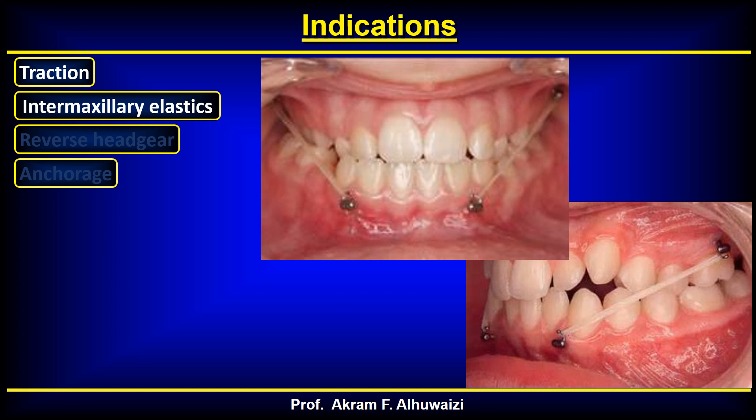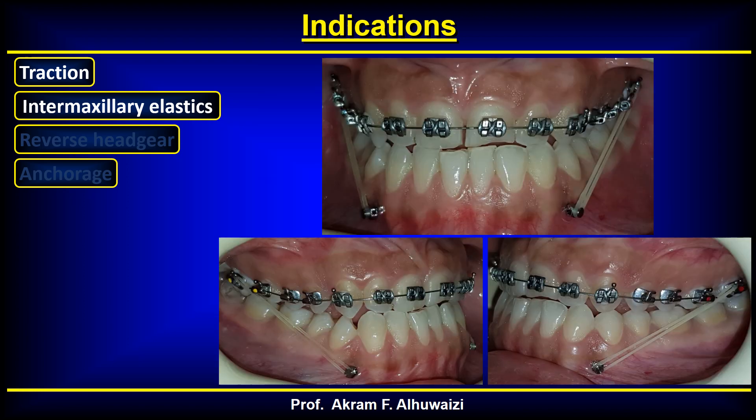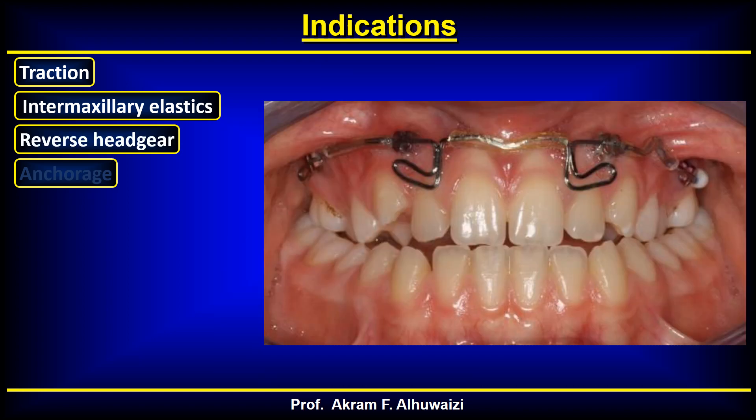Intermaxillary elastics can be used in Class 3 cases with TADS. It is common practice to use Class 3 elastics with TADS to reduce the Class 3 effect without adding brackets to the teeth, which would otherwise cause lingual tipping of the incisors rather than true bone growth. Note that the examples shown use mini-plates, but TADS can be used in the same manner. In cases with lingual tipping of the lower incisors, it is favorable to add a TADS so these teeth can come forward without the need for bonding the lower arch.